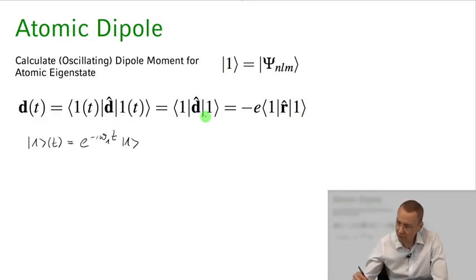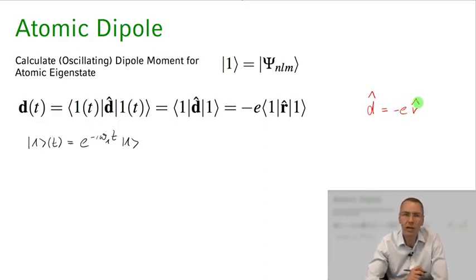Now the dipole operator, remember d, that was just -e times the position operator of the electron, where e is the electron charge. So basically it comes down to evaluating the expectation value of the position operator of the electron of this state 1. So what can we say about that?